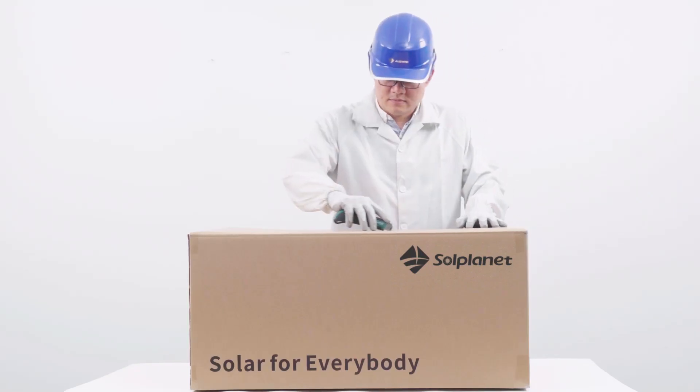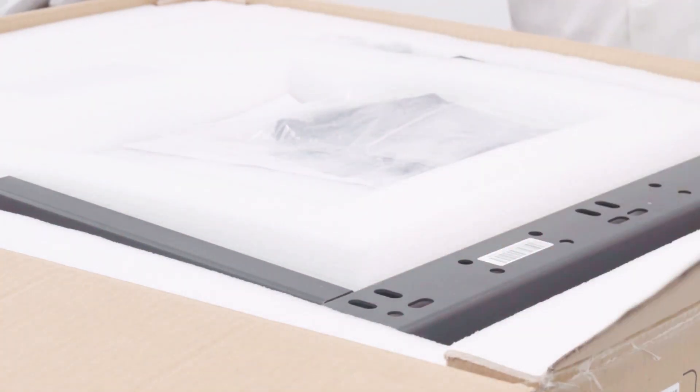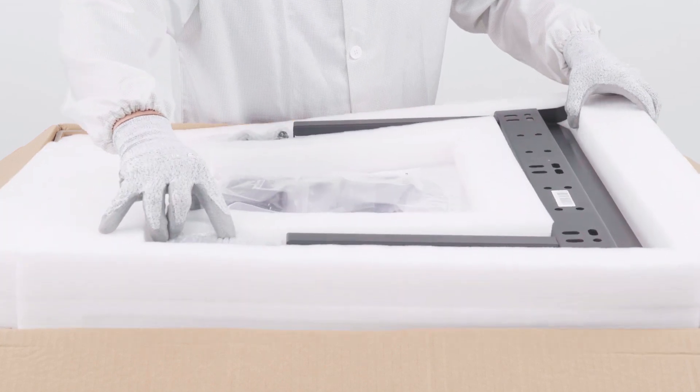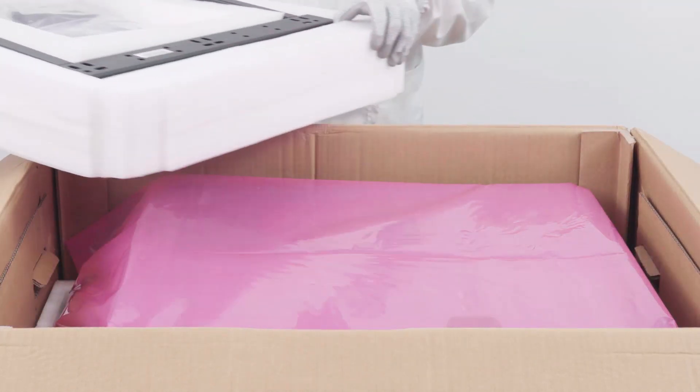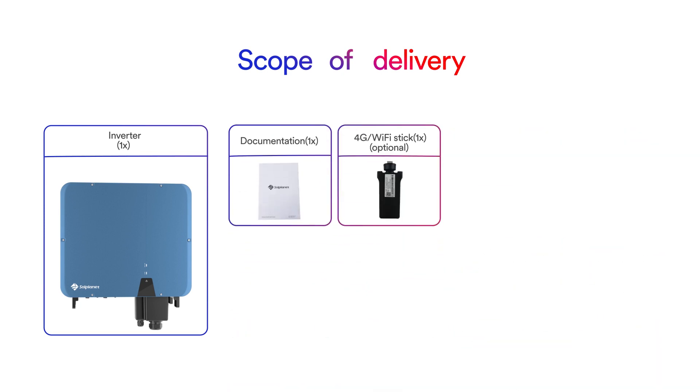Thoroughly inspect the packaging upon delivery. If you detect any damage to the packaging which indicates the inverter may have been damaged, inform the responsible shipping company immediately. We will be glad to assist you if required. Carefully check all the components in the carton. In case anything is missing, please contact your dealer.